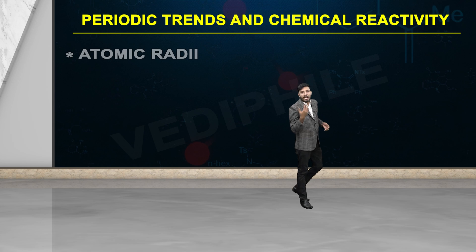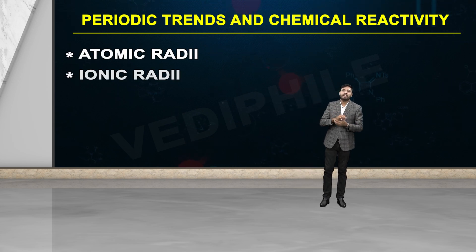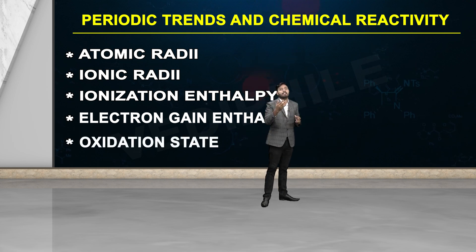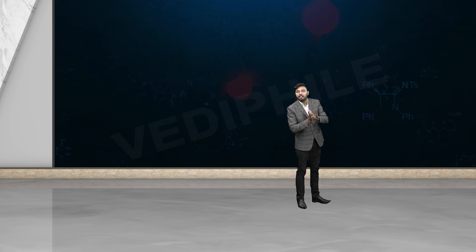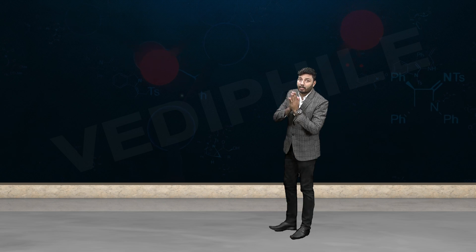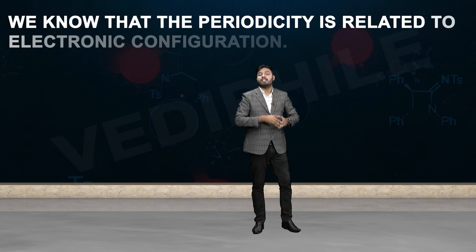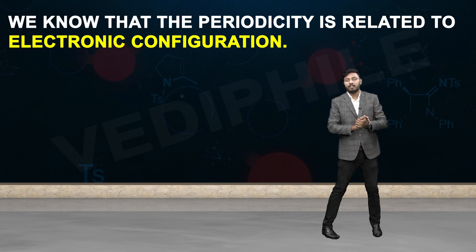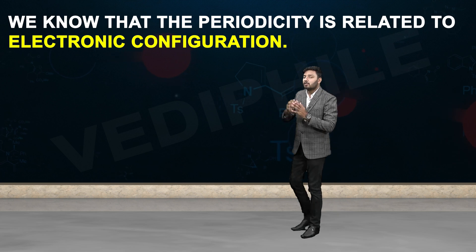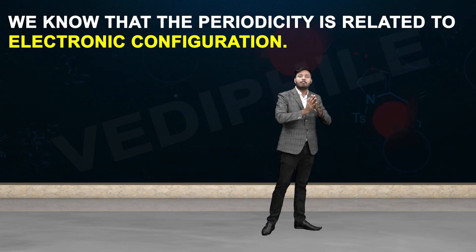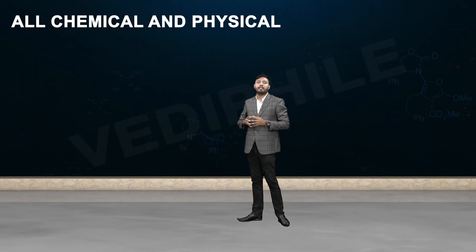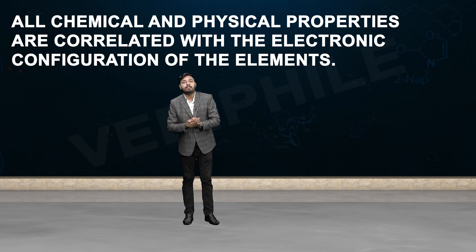These fundamental properties include atomic radii, ionic radii, ionization enthalpy, electron gain enthalpy, and oxidation state. We have already studied the periodic trends in these fundamental properties. The key point is that all chemical and physical properties are correlated with the electronic configuration of the element — periodicity is totally related to electronic configuration, as we saw that shells increase going down a group.